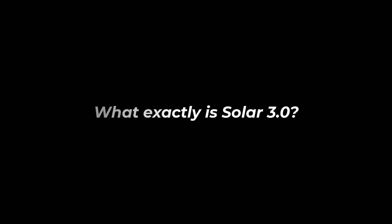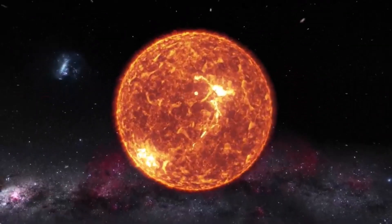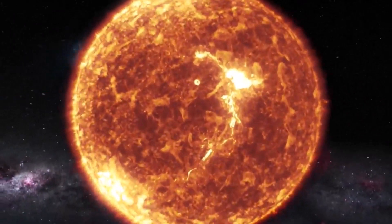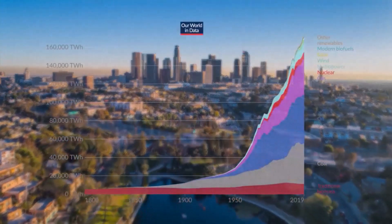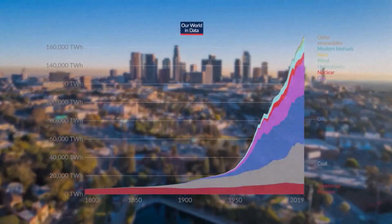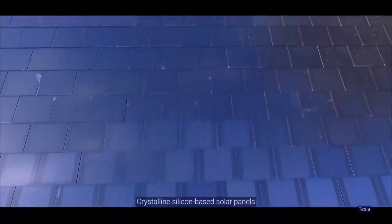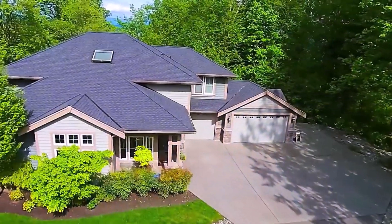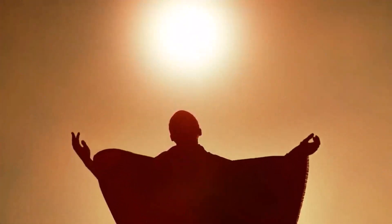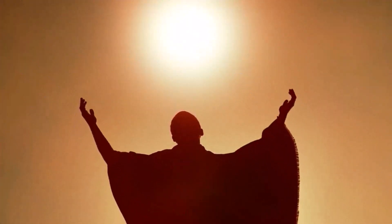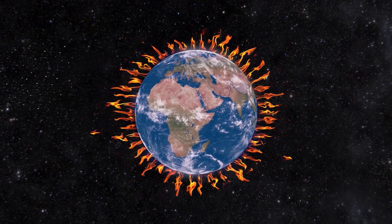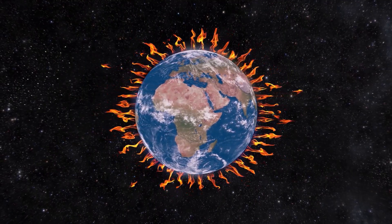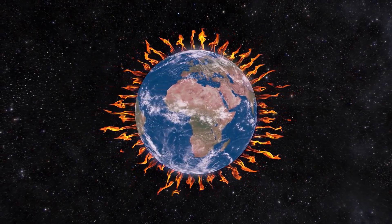What does solar 3.0 mean? The amount of electricity made by solar and wind power has gone up a lot, and solar technology keeps getting better. To get energy from the sun, two main types of solar cells are used. Solar energy is made possible by solar cells, which collect photons from the sun. It starts an electrochemical reaction that makes electricity.